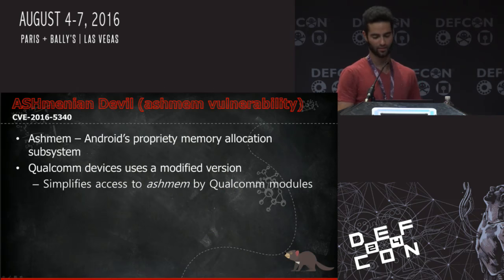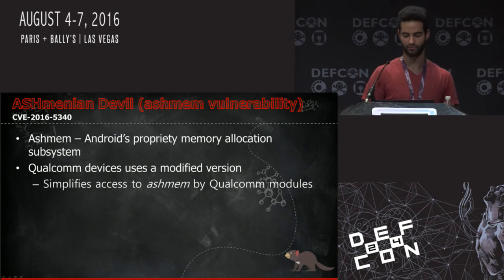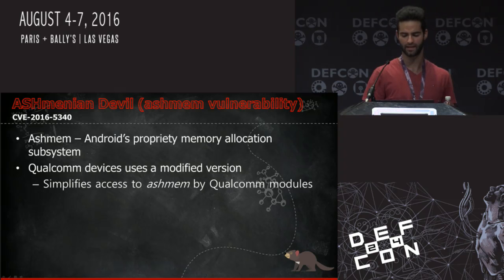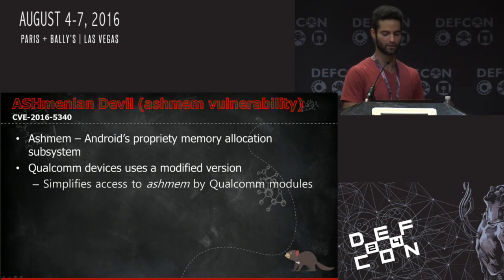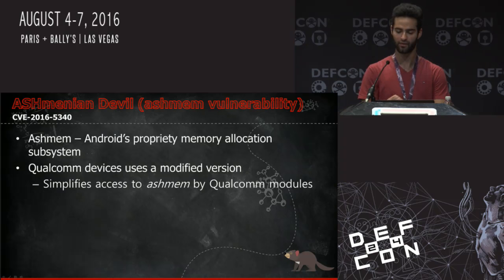Shamanian Devil is a vulnerability in the Ashmem mechanism. Ashmem, or Android's shared memory, is a unique shared memory allocator for Android. It resembles the Linux SHMEM mechanism but with slightly different behavior, and it supports a very simple file-based API. Qualcomm expanded the functionality and API of Ashmem so it can easily obtain information about the file — an Ashmem file from an FD — for example, when you want to map Ashmem memory to the GPU.